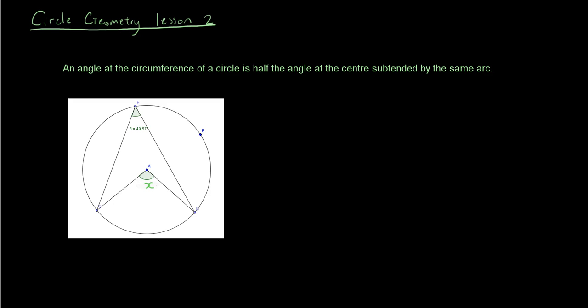Find angle X. Using the information that we have which says that this angle is 49 degrees, X must be double the angle on the circumference.